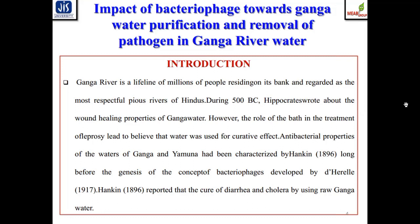The antibacterial property of the water of the Ganga and Yamuna was characterized by Hankin in 1896, long before the concept of bacteriophage was evolved by D. Hadley in 1917. Hankin, in the year 1896, reported the cure of diarrhea and cholera by using the raw Ganga water. These are the basic history and the rationale behind this particular deliberation.